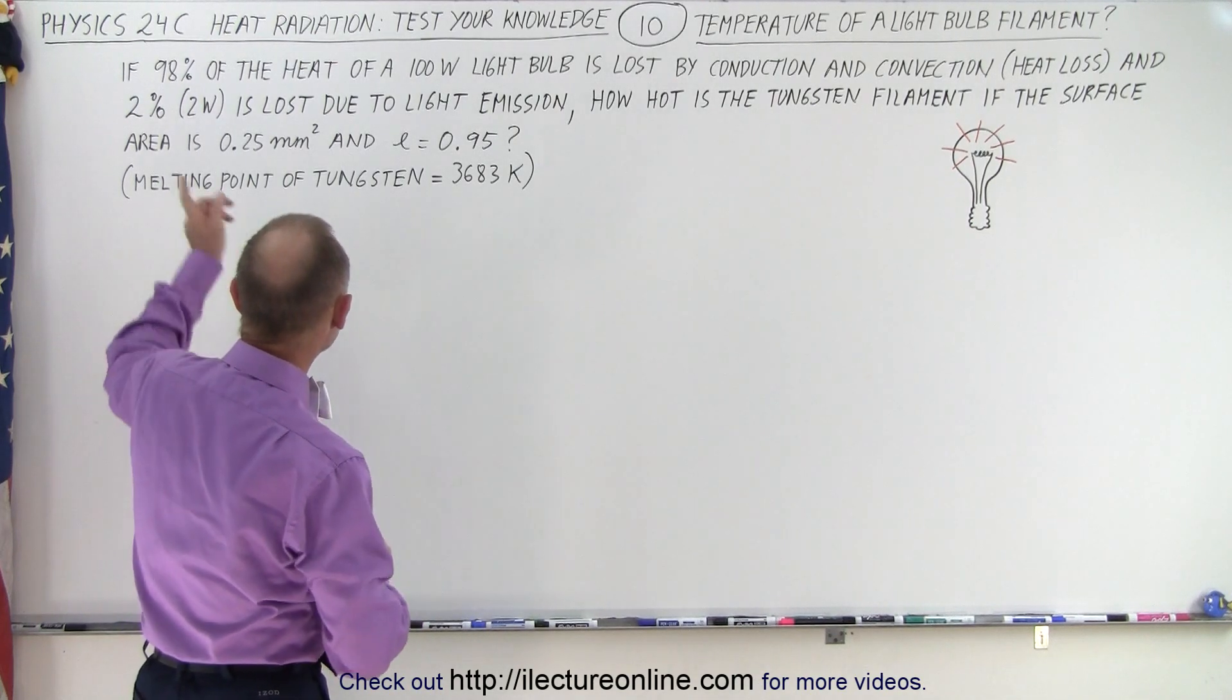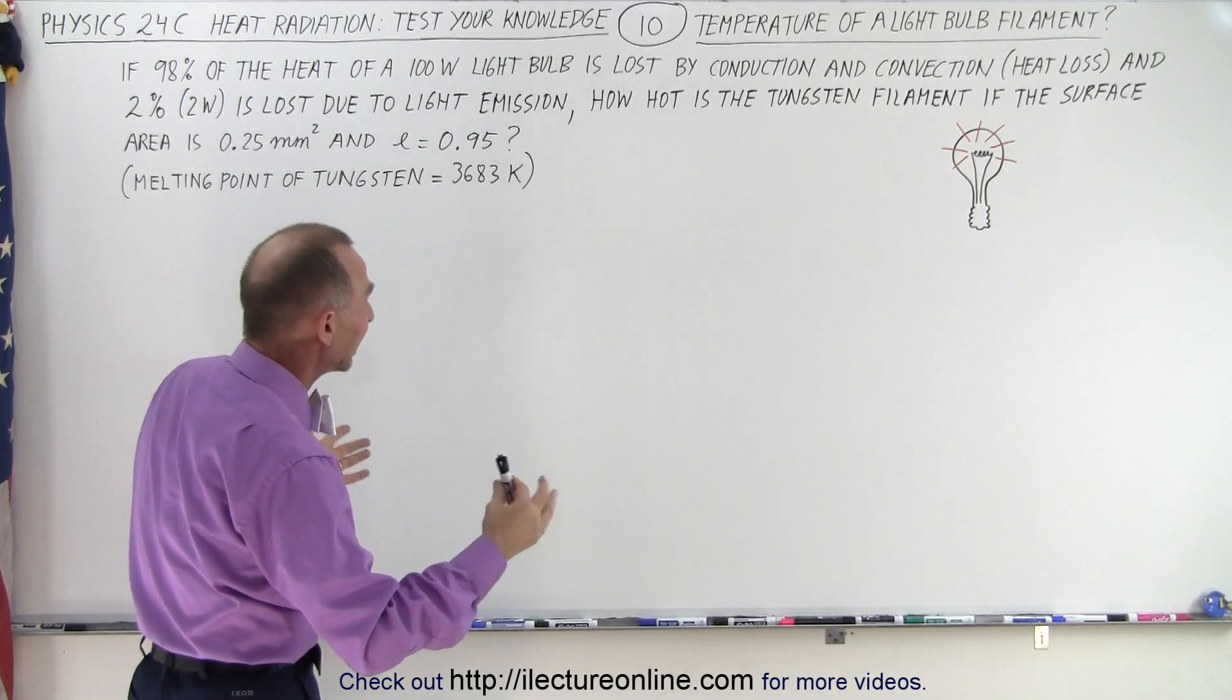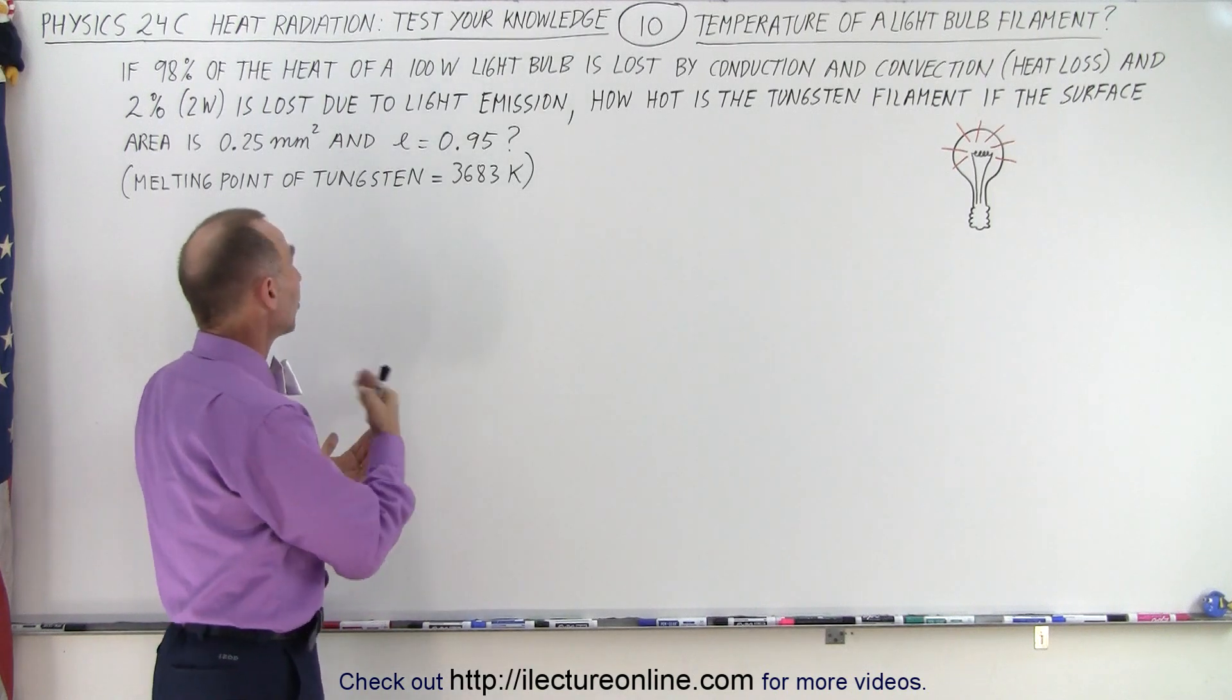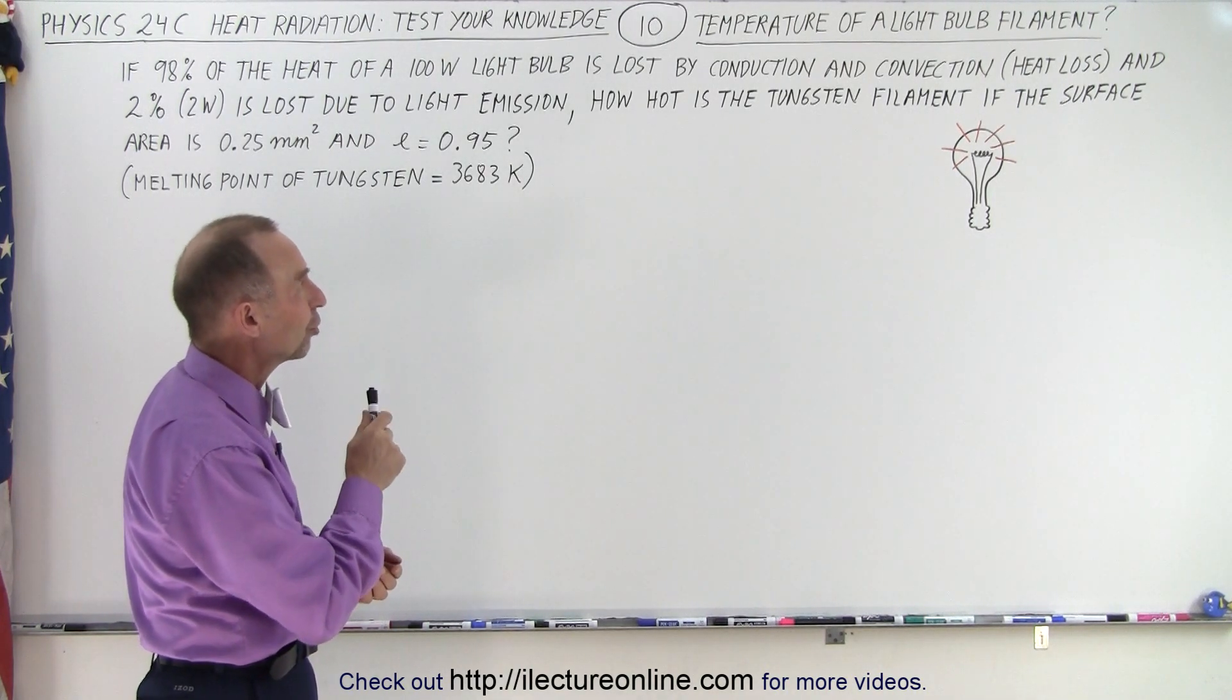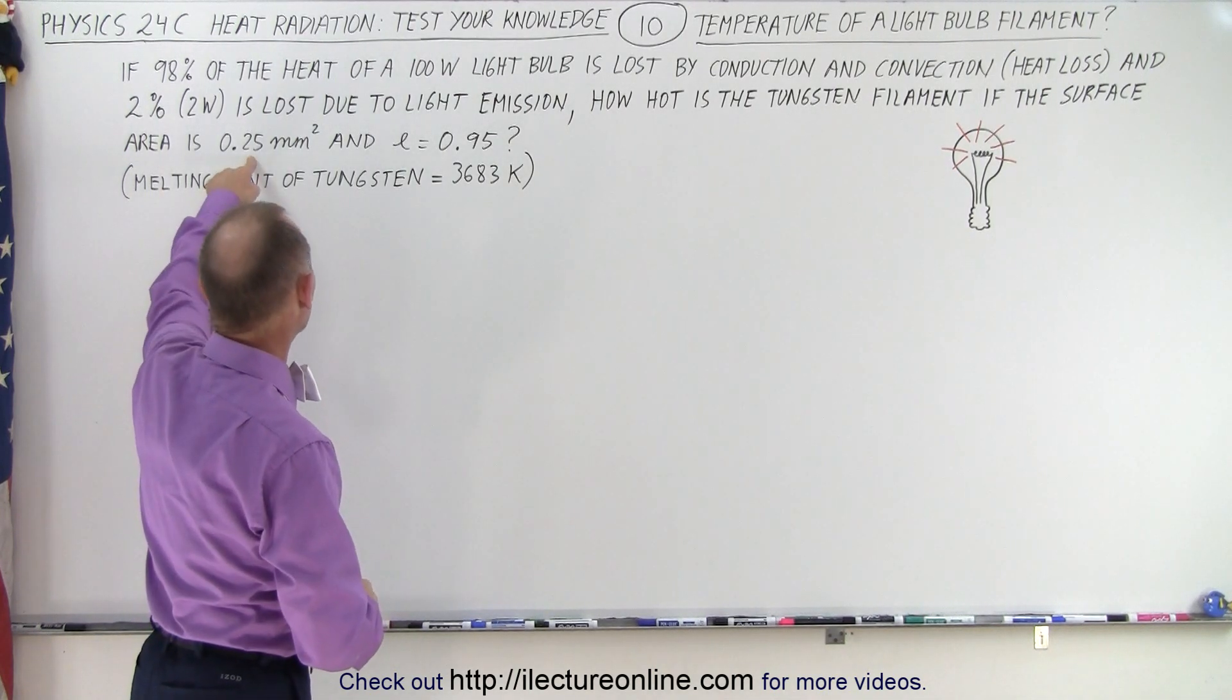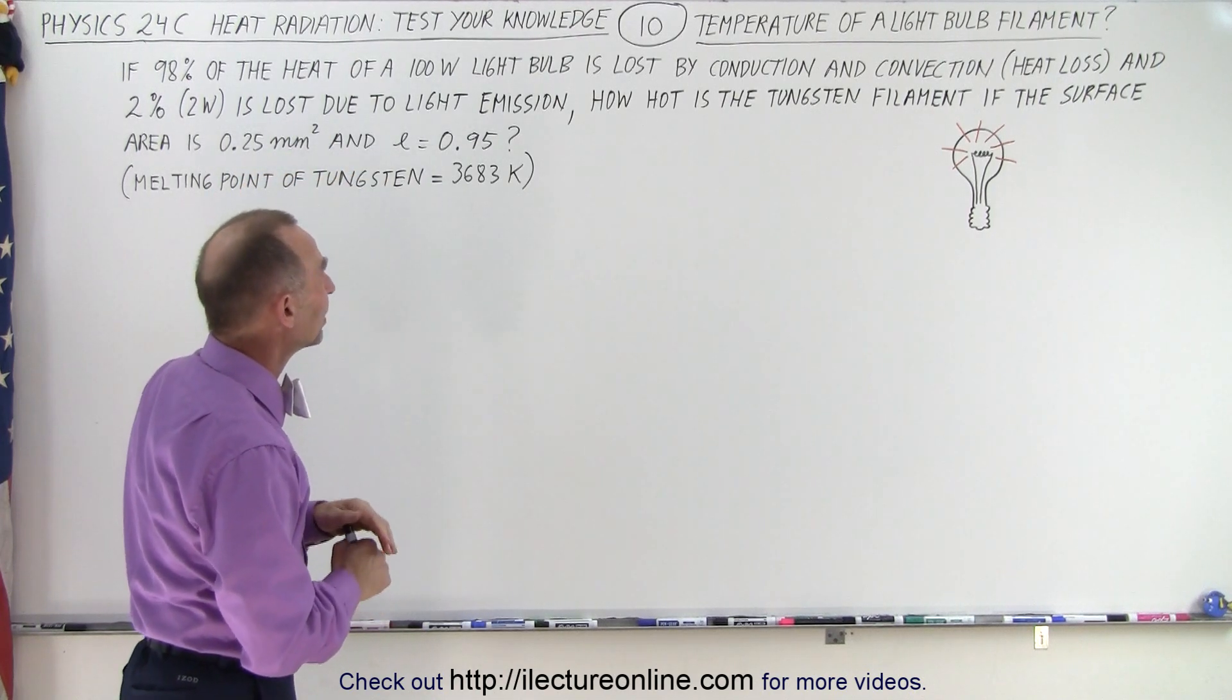So if 98% of the heat of a 100-watt light bulb is lost by conduction and convection and only 2% (2 watts of the 100 watts) is lost due to light emission, what is the temperature of the tungsten filament, assuming that the surface area is 0.25 square millimeters and the emissivity is 0.95?